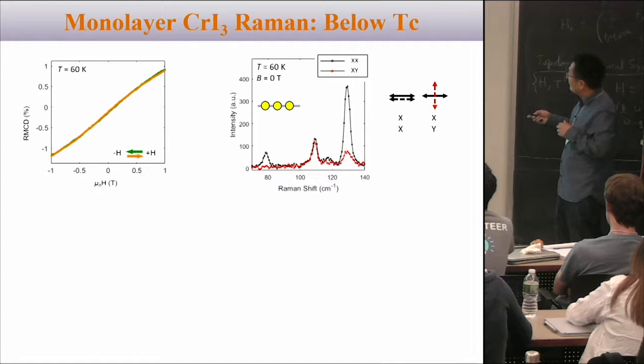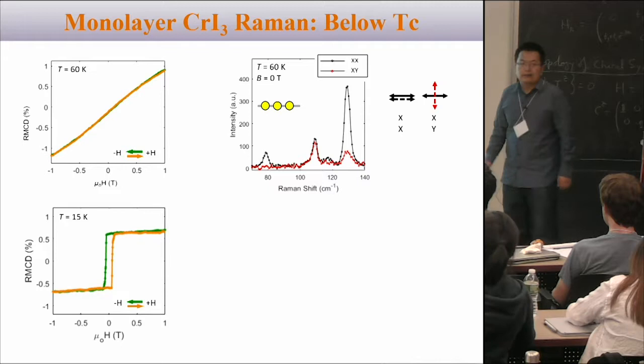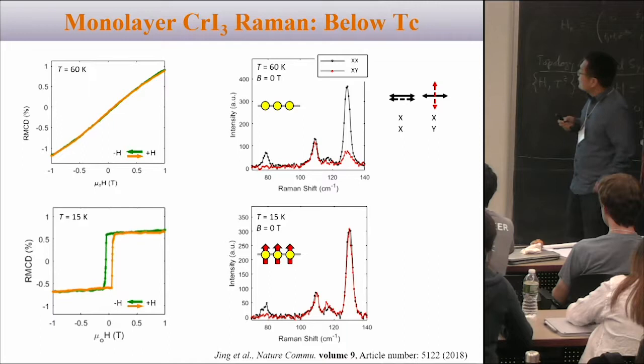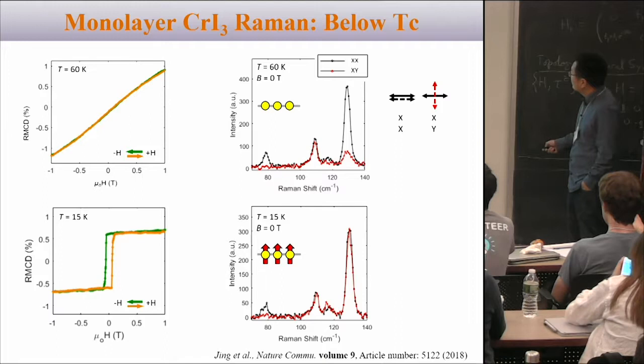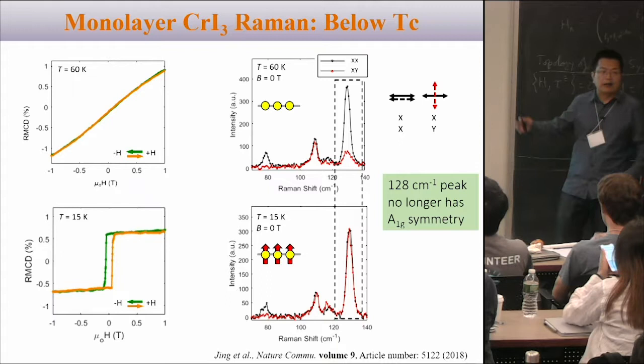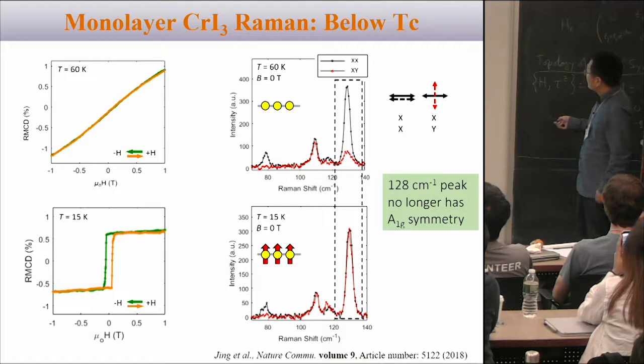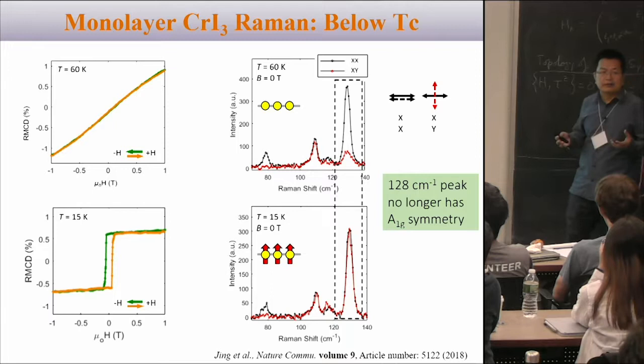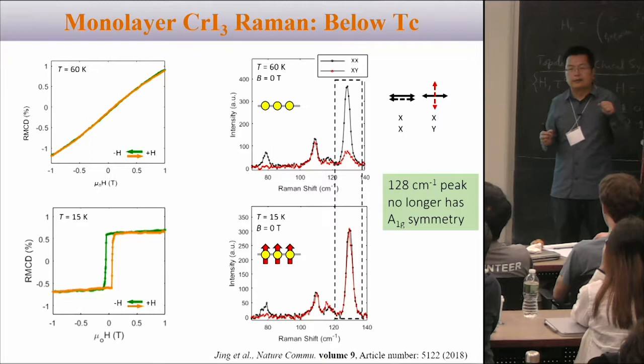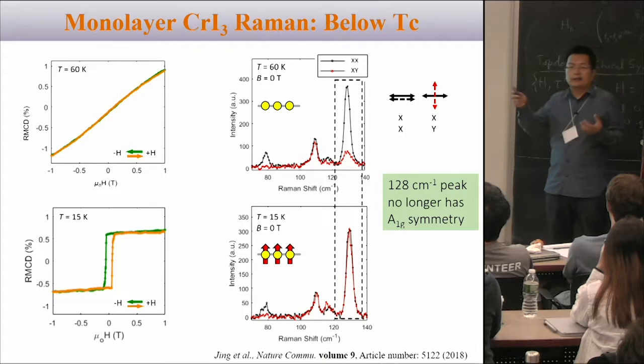Now let's cool down the sample to 15 Kelvin. We do Kerr rotation measurements showing hysteresis — indicating magnetic order. Looking at the Raman in the XX and XY channels, we clearly see a very strong signal in the XY channel. There is an off-diagonal component coming into play. The 128 wavenumber peak no longer has A1g symmetry because A1g is fully symmetric and can only have a diagonal component. Once we introduce this magnetic order, these off-diagonal terms come into play.